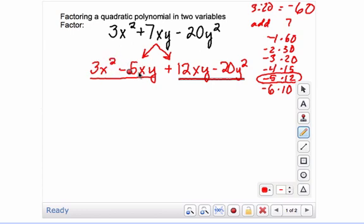What can I take out of both of these? Well, the only thing they have in common is an x. So I common factor out the x, and that leaves me with 3x minus 5y. If I distribute the x back in here, that's what I get.